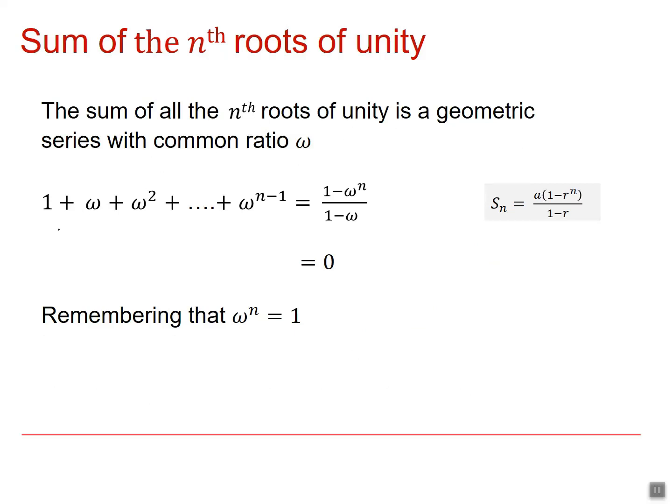So what about the sum of all the nth roots of unity? Well, it's a geometric series. We've got 1 plus omega plus omega squared. So we've got a first term of 1 and a common ratio of omega. Well, the sum for that is going to be 1 times 1 minus omega to the n, divided by 1 minus omega. But that's equal to 0 because we know that omega to the n is equal to 1. So if we add all of our nth roots of unity together, whatever the value of n, we will always get 0.